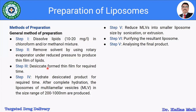Step three: desiccate the formed thin film for the required time in order to remove the solvent from the film. Step four: hydrate the desiccated product for the required time — the hydration step — in order for there to be swelling of the phospholipids. After complete hydration, liposomes of multilamellar vesicles in the size range of 200 to 1000 nanometers are produced. Step five: reduce the multilamellar vesicles into smaller liposome size by either sonication, extrusion, or any other suitable method.